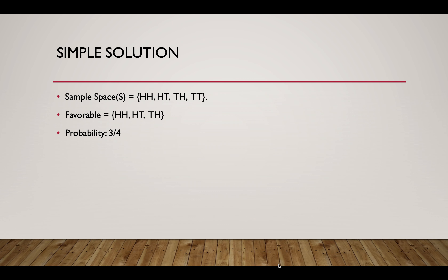So let's go to the simple solution. Since it's a fair coin flip and we flip the coin twice, we can have four different results, meaning that our sample space S equals {HH, HT, TH, and TT}. Out of these four different results, three of them are in our favor: HH, HT, and TH.